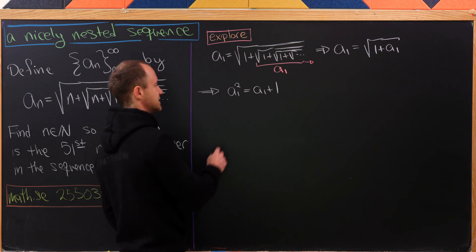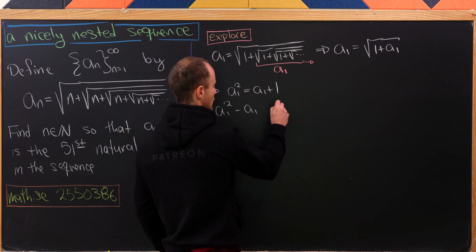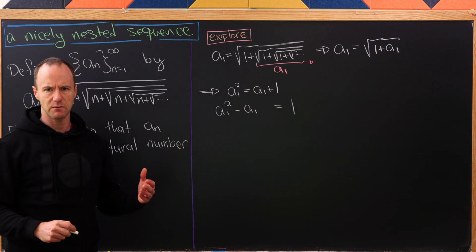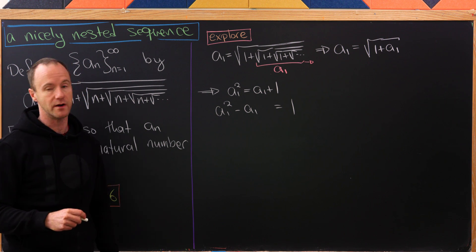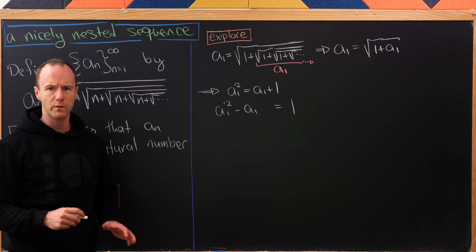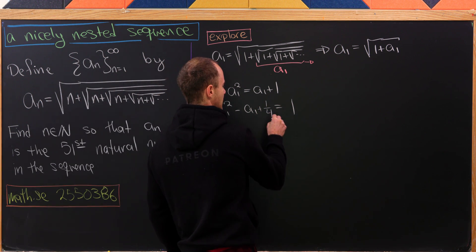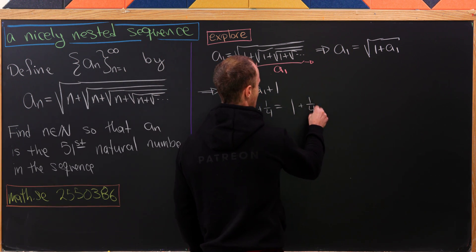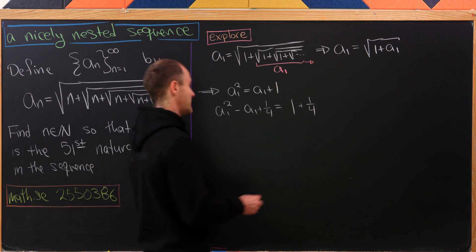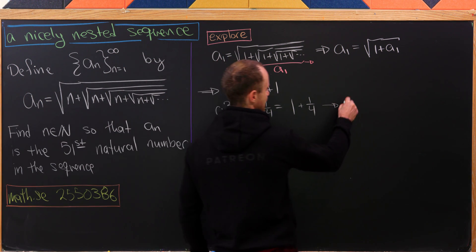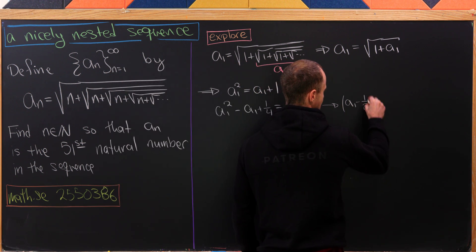Let's move some things around, leaving us with a_1 squared minus a_1 equals 1. We could use the quadratic formula or complete the square, and that's what I'm going to do. I'll add 1/4 to both sides, which allows me to factor the left-hand side.